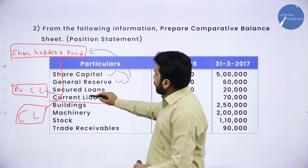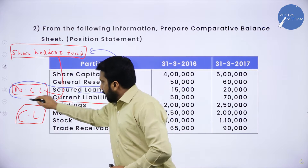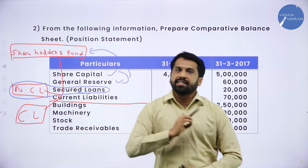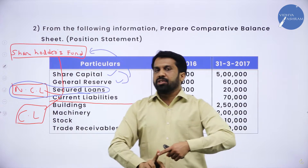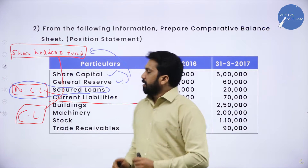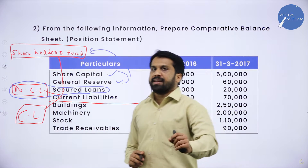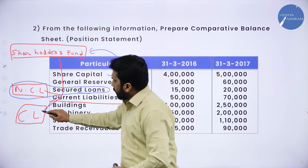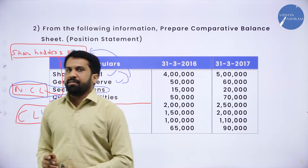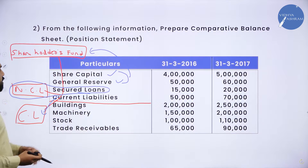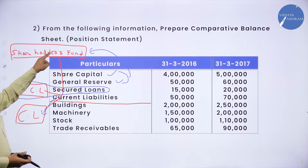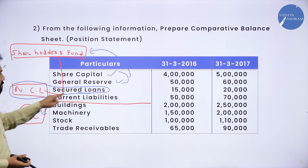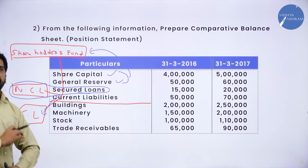Secured loan comes under non-current liability, which is the second classification. Under non-current liability, two things come: debentures and long-term loans. Secured loans are treated as debentures. The third classification is current liability, and current liability items come under current liability only.